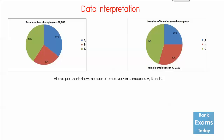Today we will do a very simple data interpretation question set. Total number of employees is 22,000 and there are three companies: A, B, and C. The number of females in each company is 25% for A, 30% for B, and 45% in C. The number of female employees in company A is 2100.